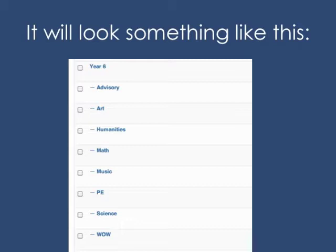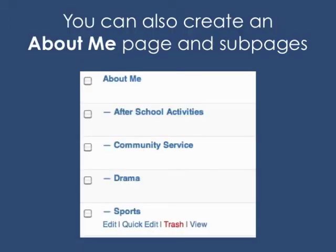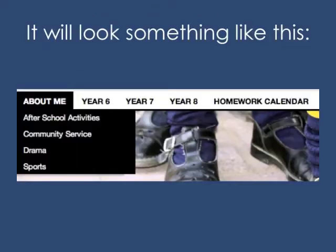When you're done, it will look something like this on the dashboard, and it will look something like this to the outside world. I also highly recommend that you have students create an About Me page with subpages underneath, where they can showcase their after-school activities, any community service they may be involved in, drama productions, sports, and things of that nature. It helps students start to take a handle on their digital footprint, and it will look something like this on the main page of the ePortfolio.